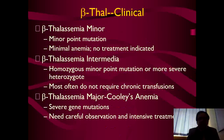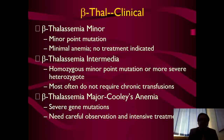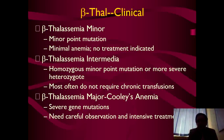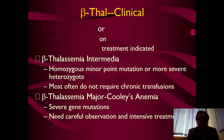Beta thalassemia clinical types: Beta thalassemia minor is a minor point mutation with minimal anemia — usually no treatment required. Beta thalassemia intermedia is a homozygous minor point mutation but may become severe; heterozygotes most often do not require chronic transfusions. Beta thalassemia major, also known as Cooley's anemia, is a serious disorder with severe gene mutations. These patients need careful observation and mostly require intensive treatment.